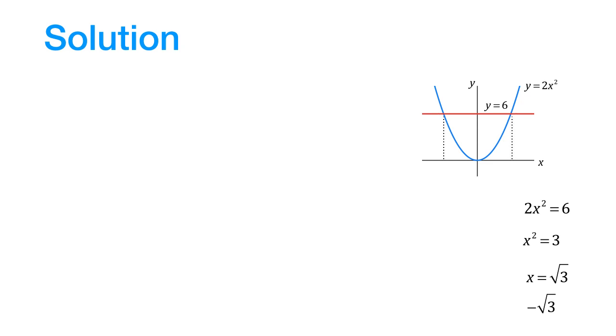Now let us mark these two points on the graph. So we have these two points now. We can now find the area bounded by these two curves. So the area is given by the integral of 6 minus 2x squared from minus root 3 to plus root 3.